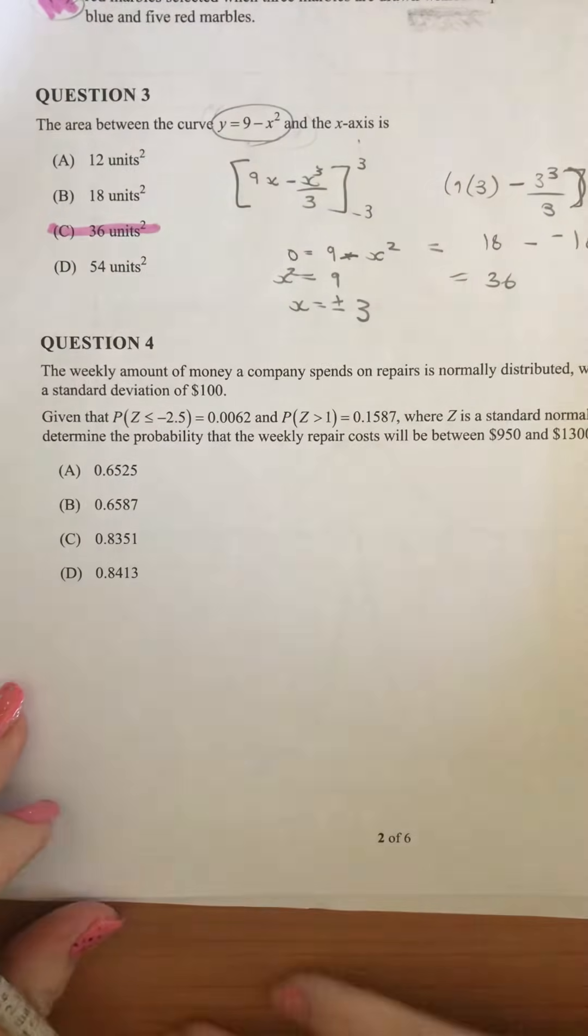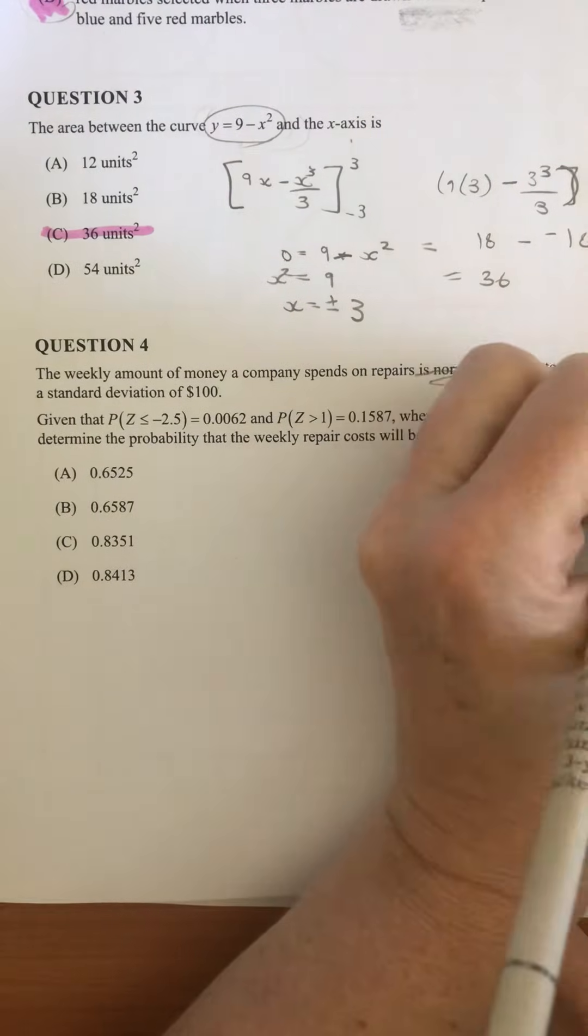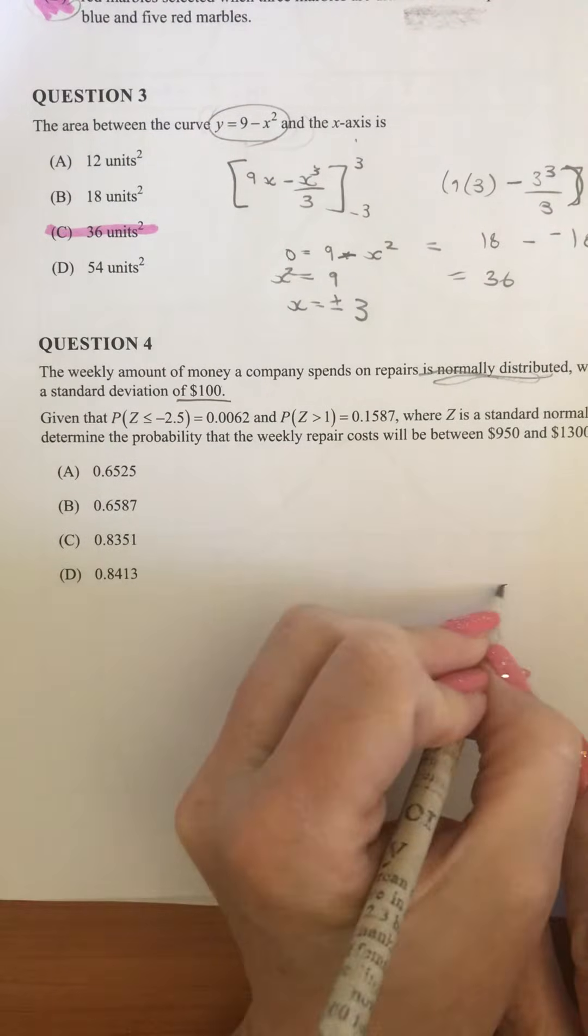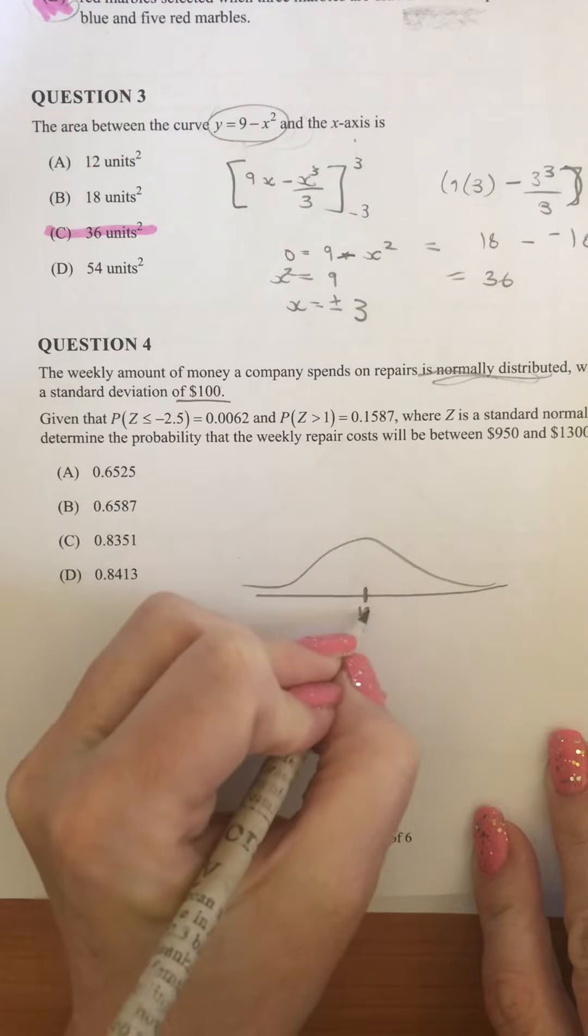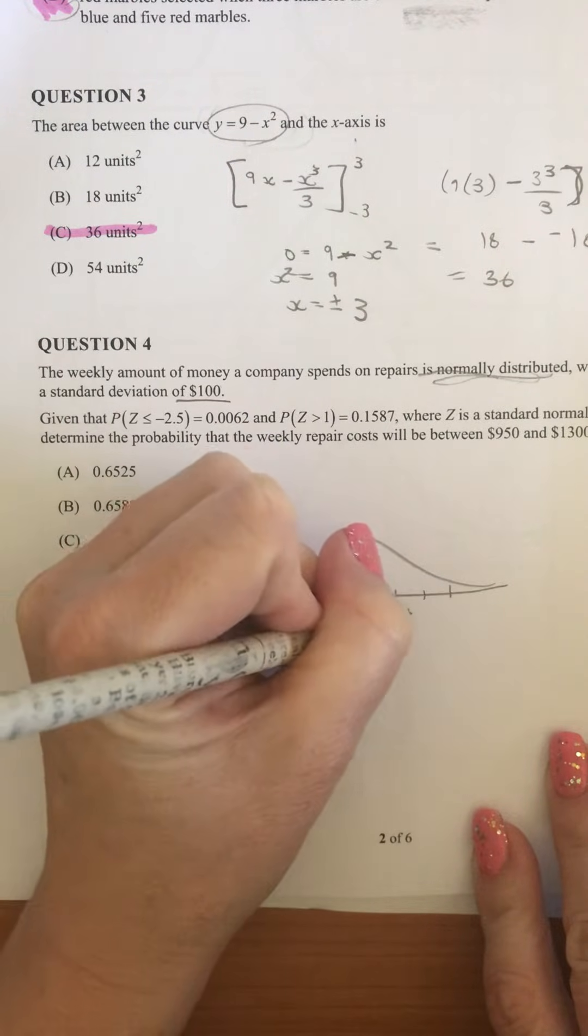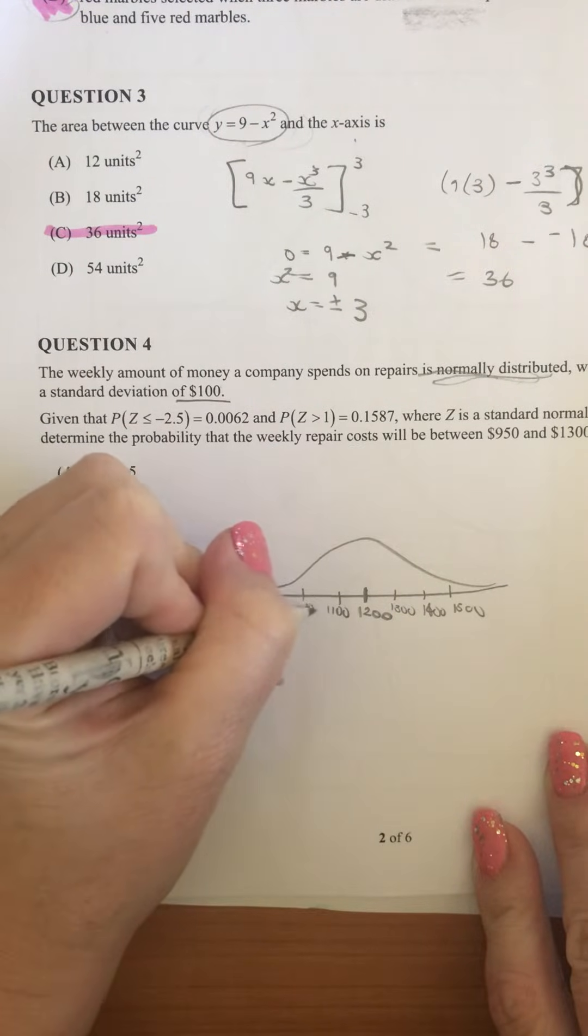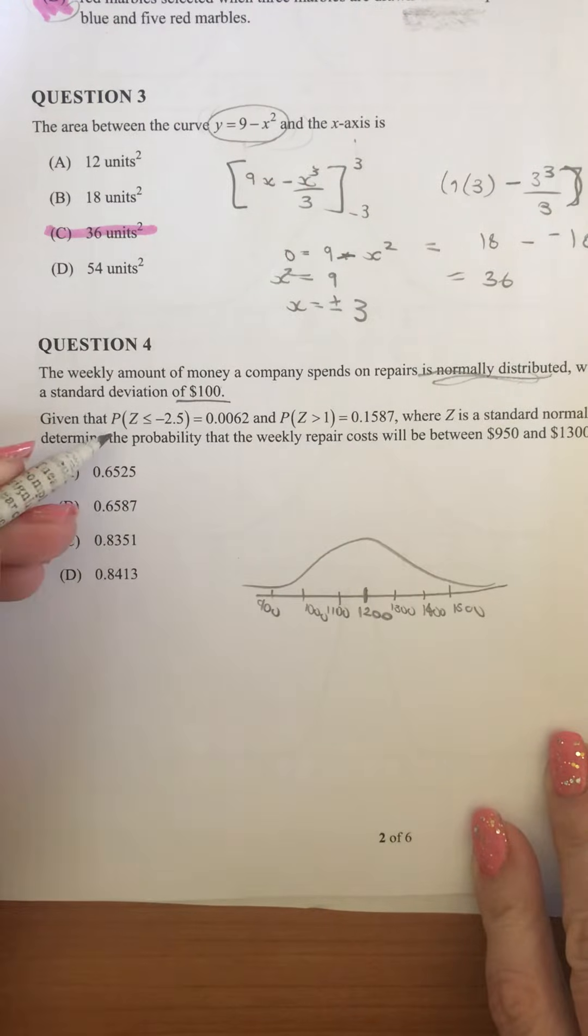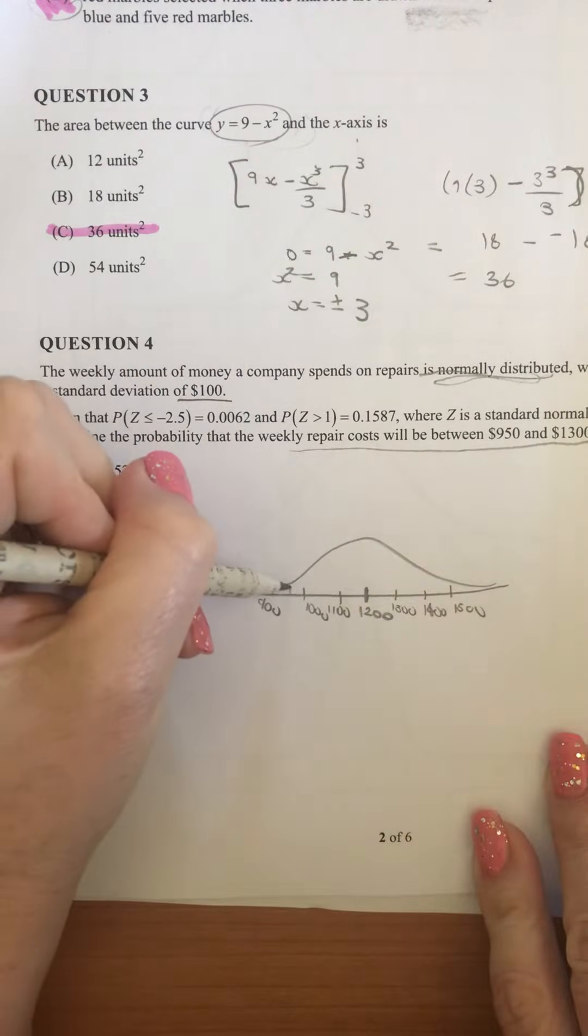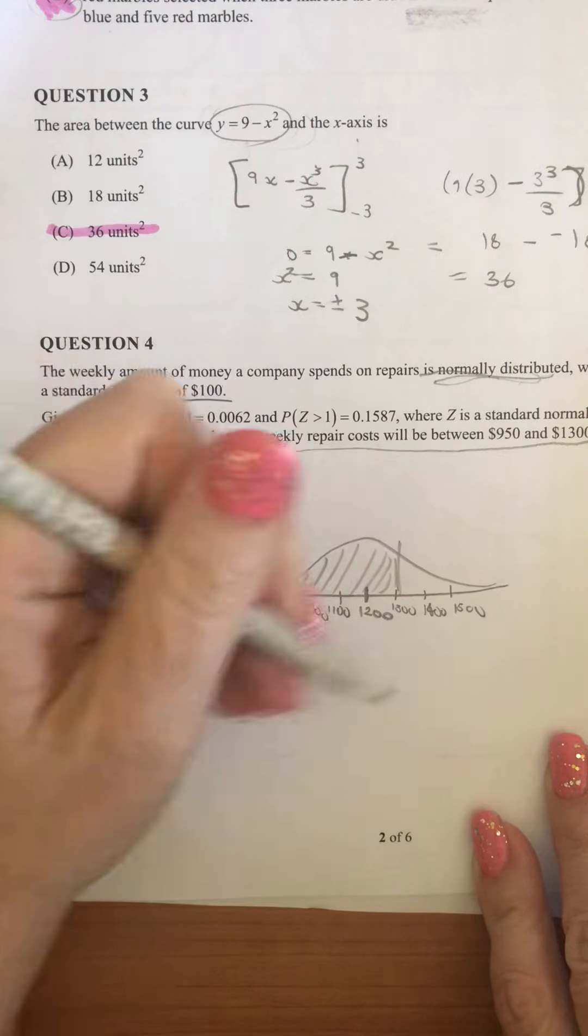Then we've got the weekly amount of money a company spends on repairs is normally distributed with a mean of 1,200 and a standard deviation of 100. Then we're told some values for the probabilities. So when we sketch what that looks like, we've got our 1,200 for our mean and our standard deviation is 100. So we're going up in 100s. So we've got 1,300, 1,400, 1,500 and down 1,100, 1,000 and 900. Now we're told that we want to find for between 950 and 1,300. So we're trying to find this area under the curve here.